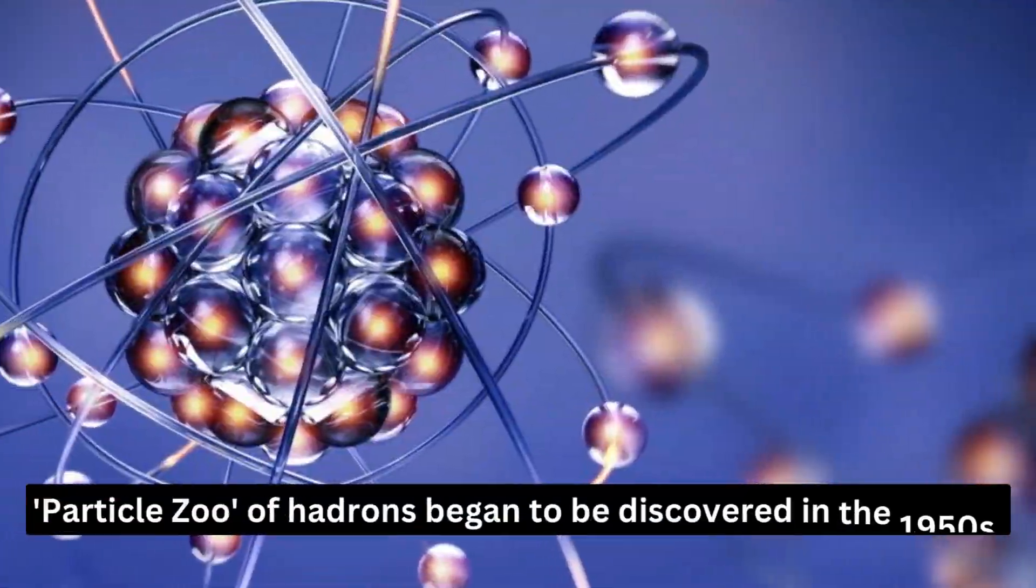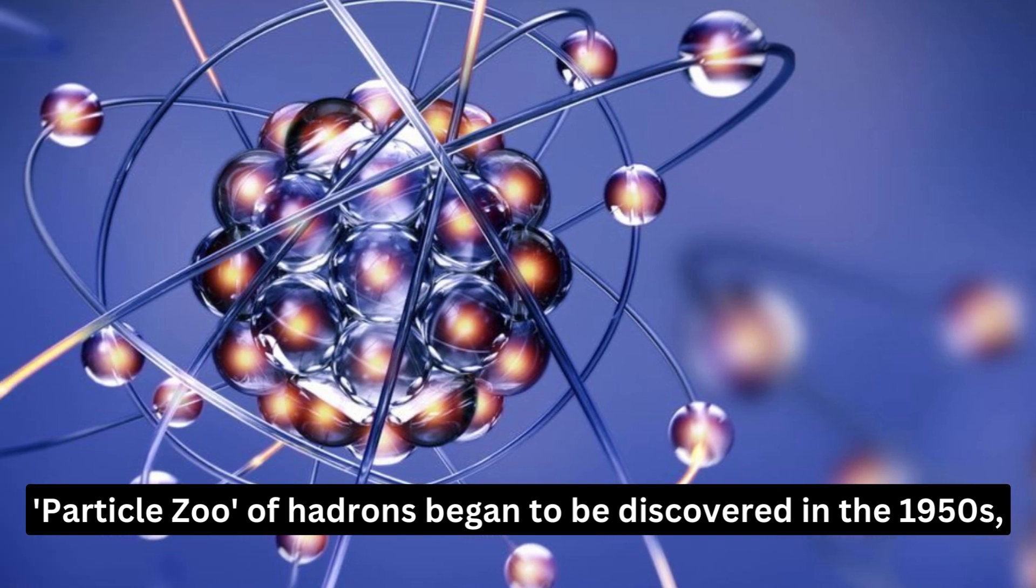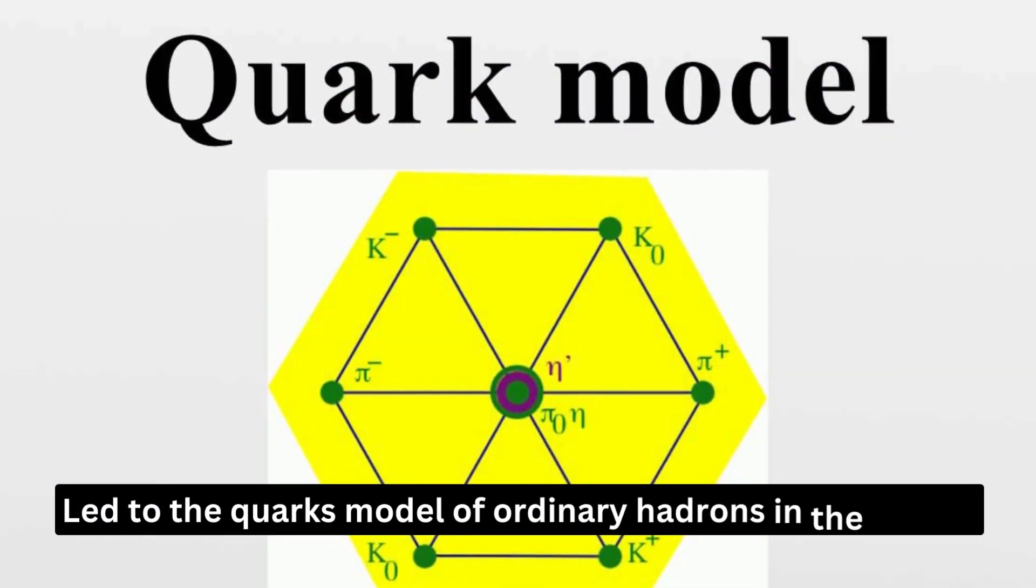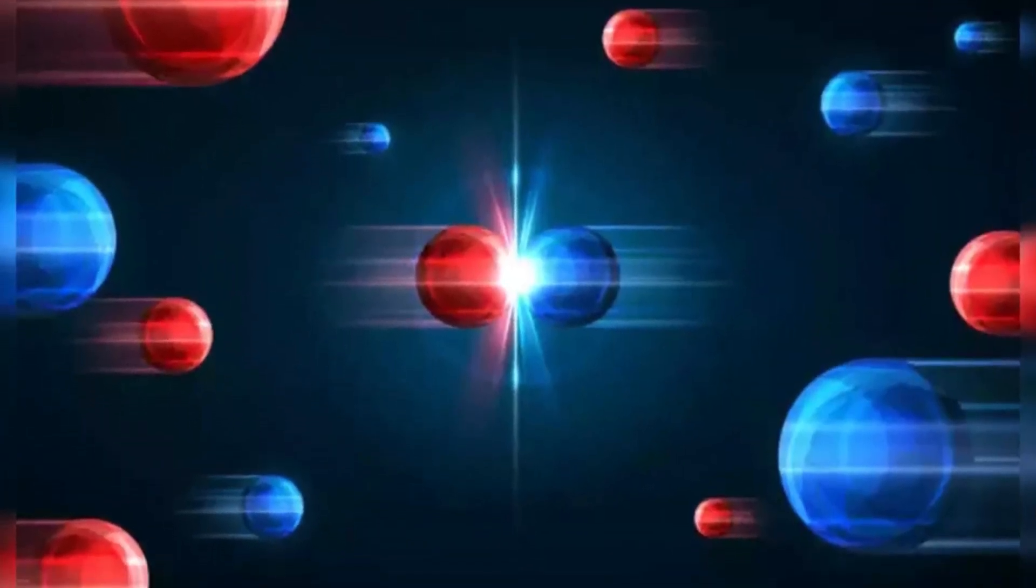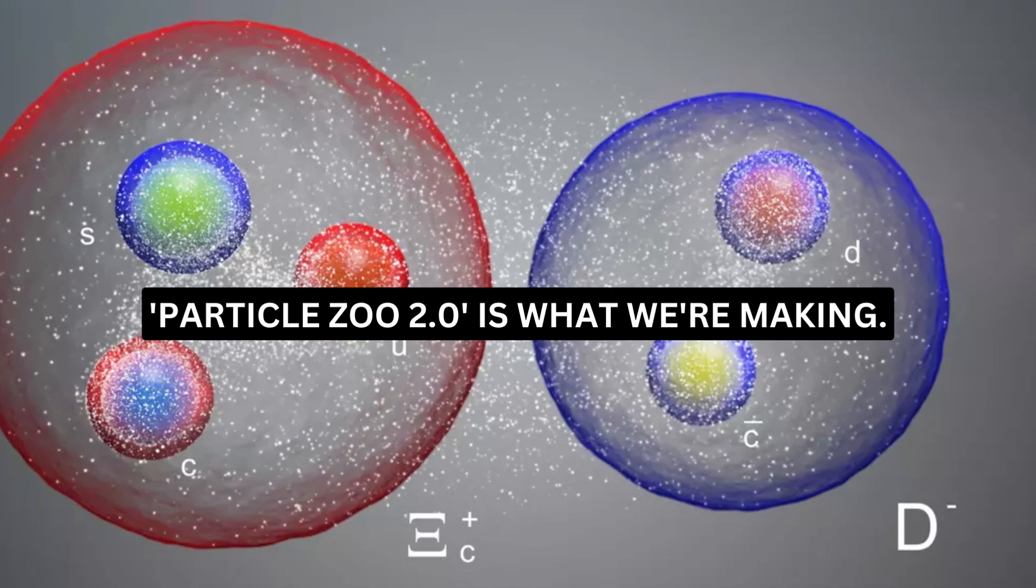Particle Zoo of hadrons began to be discovered in the 1950s, which eventually led to the quarks model of ordinary hadrons in the 1960s. We are currently in a similar phase of discovery. Particle Zoo 2.0 is what we're making.